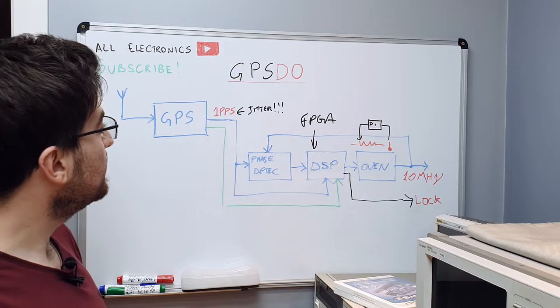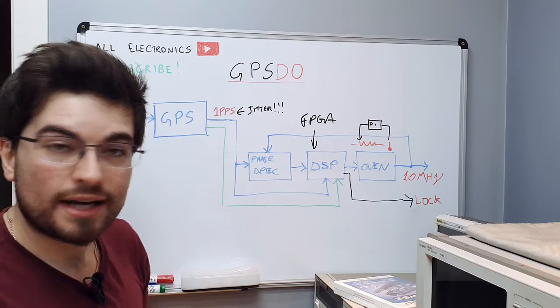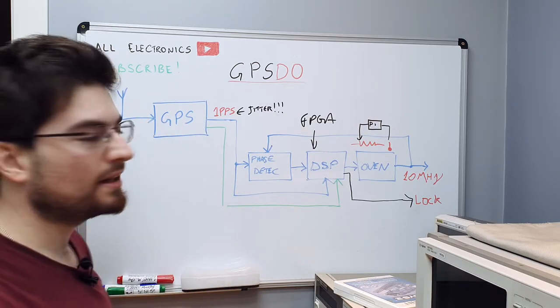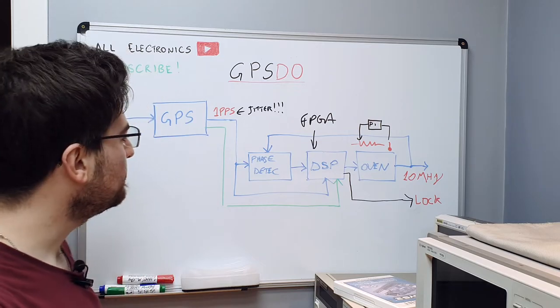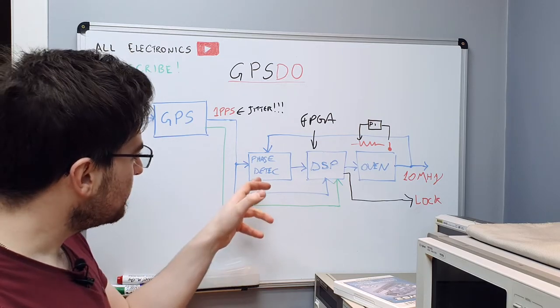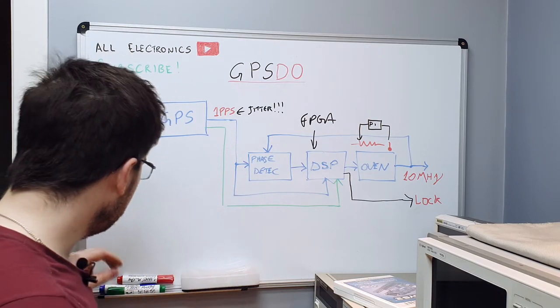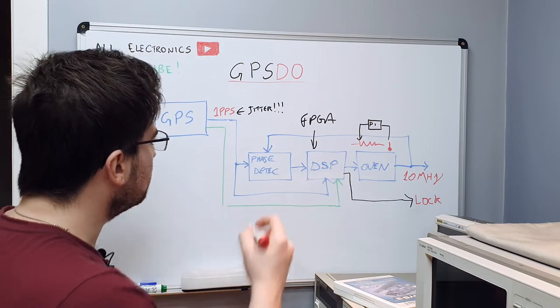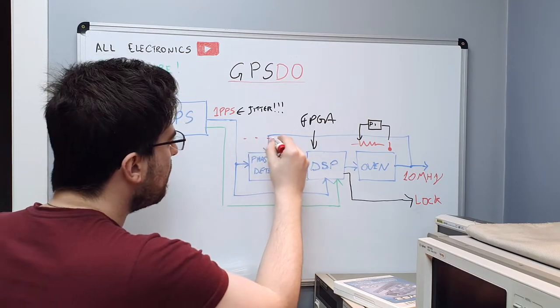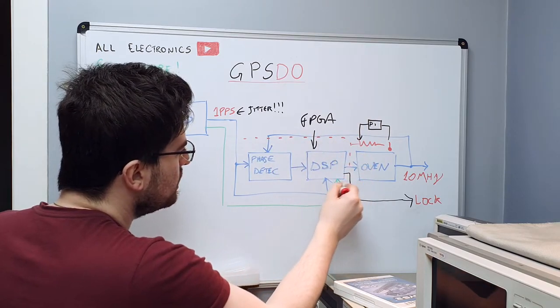And I need to buy a GPS module so we can lock to the GPS system and get our 1PPS signal. And the phase detector in reality will be implemented inside the DSP. So the FPGA is all these blocks here.